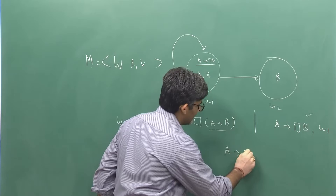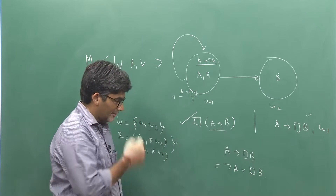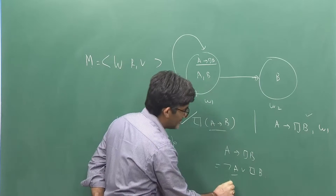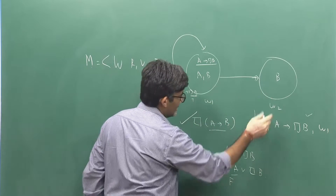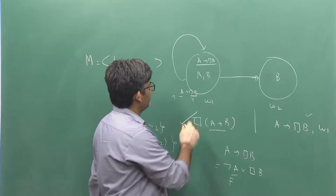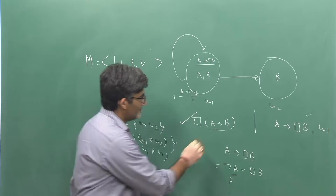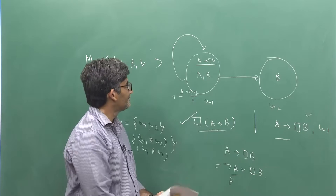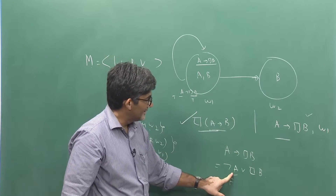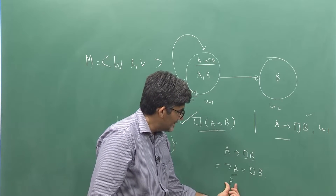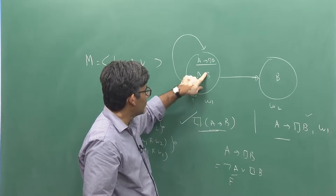A implies necessity of B is the same as not-A or necessity of B. Now not-A has to be true in W1, but A is true there, so not-A is false. However, necessity of B — in those worlds where B is true — B is true in W1 and B is true in W2 as well. So not-A is false but necessity of B is true, making the disjunction true.